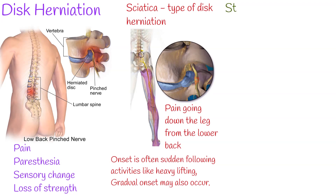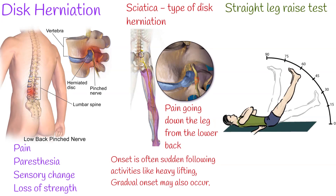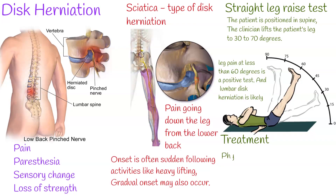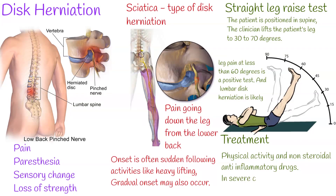A straight leg raise test is used to identify nerve root irritation or disc pathology. The patient is positioned supine, and the clinician lifts the patient's leg to 30 to 70 degrees. Leg pain at less than 60 degrees is a positive test, and lumbar disc herniation is likely. Treatment: Most cases are treated conservatively with physical activity and NSAIDs. In severe cases, surgical treatment is recommended.